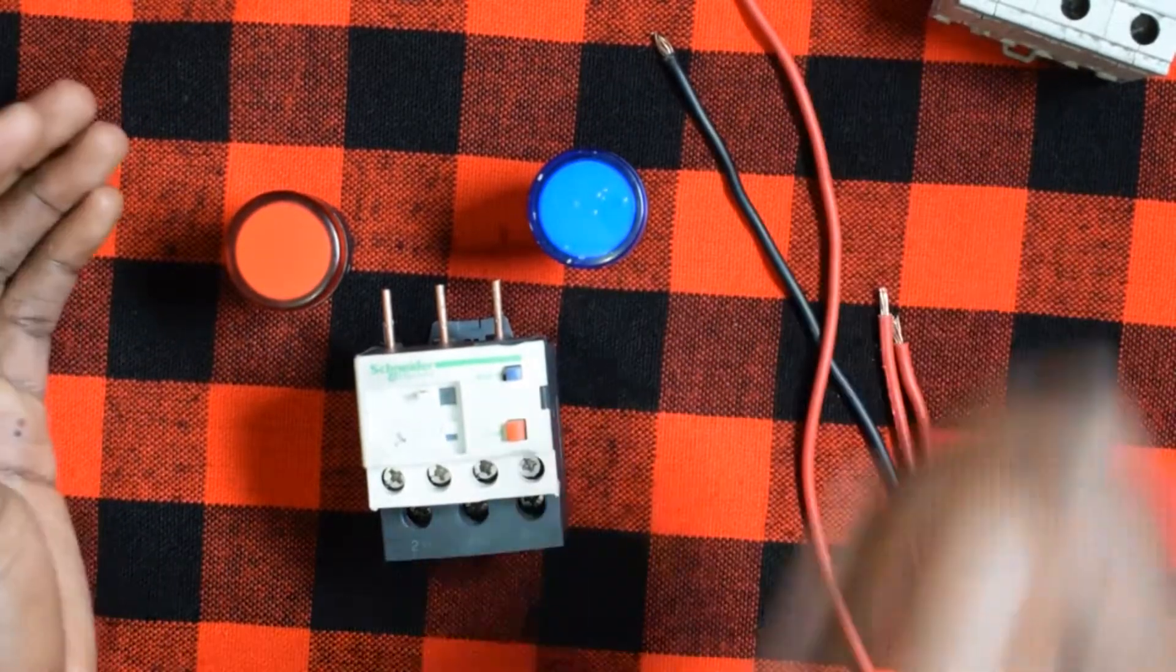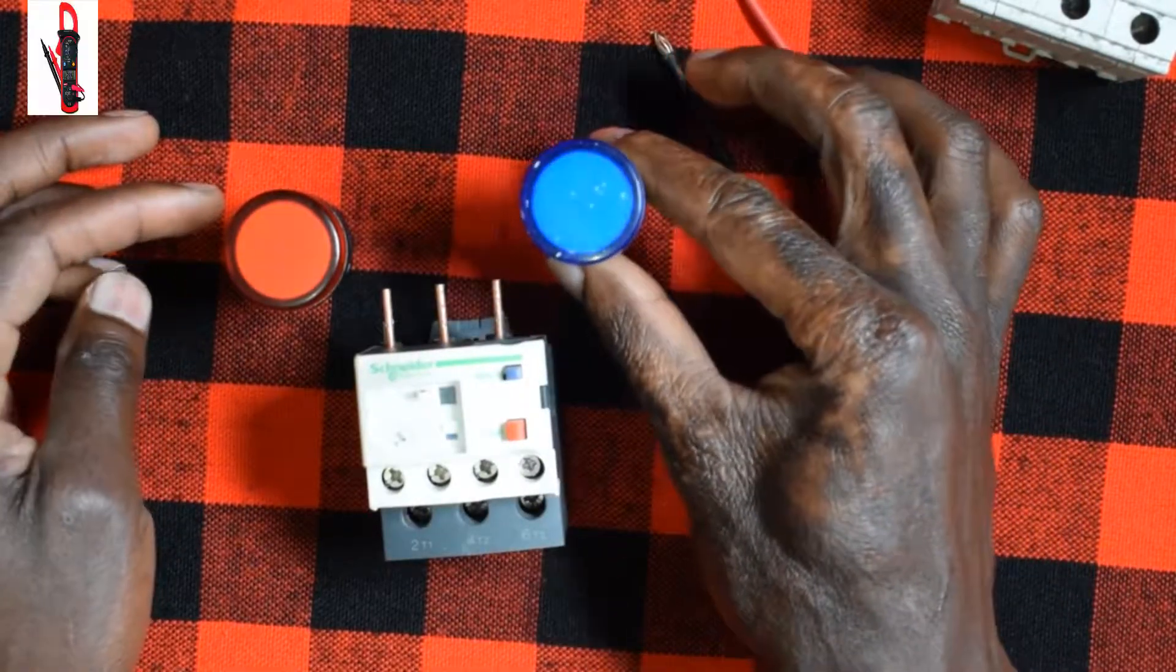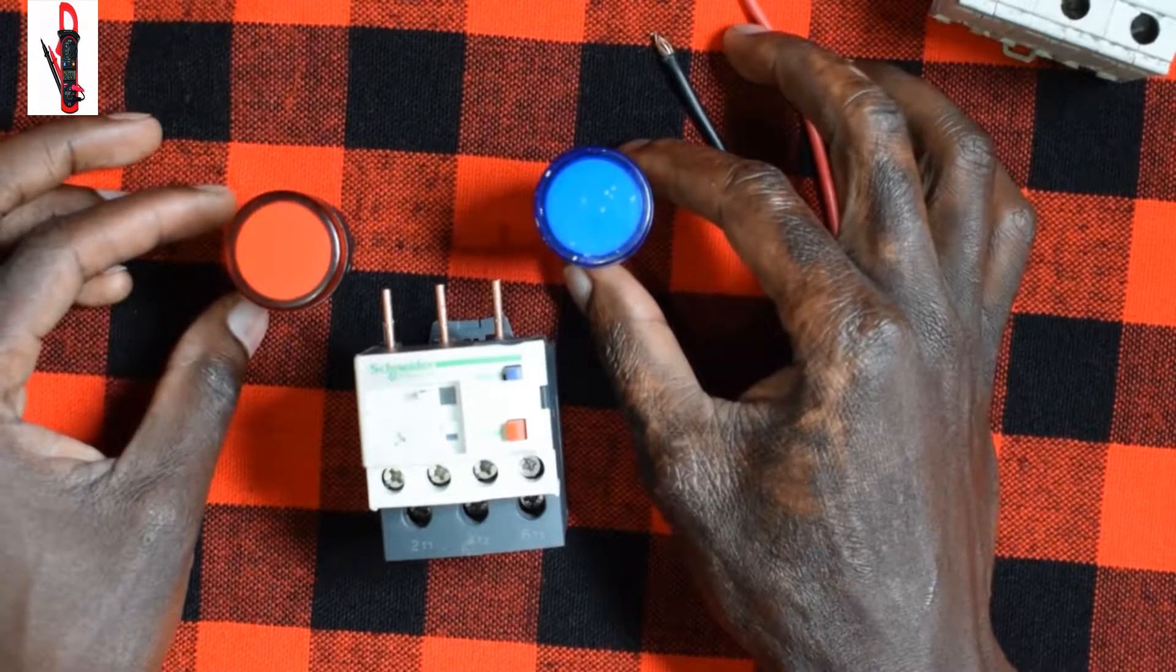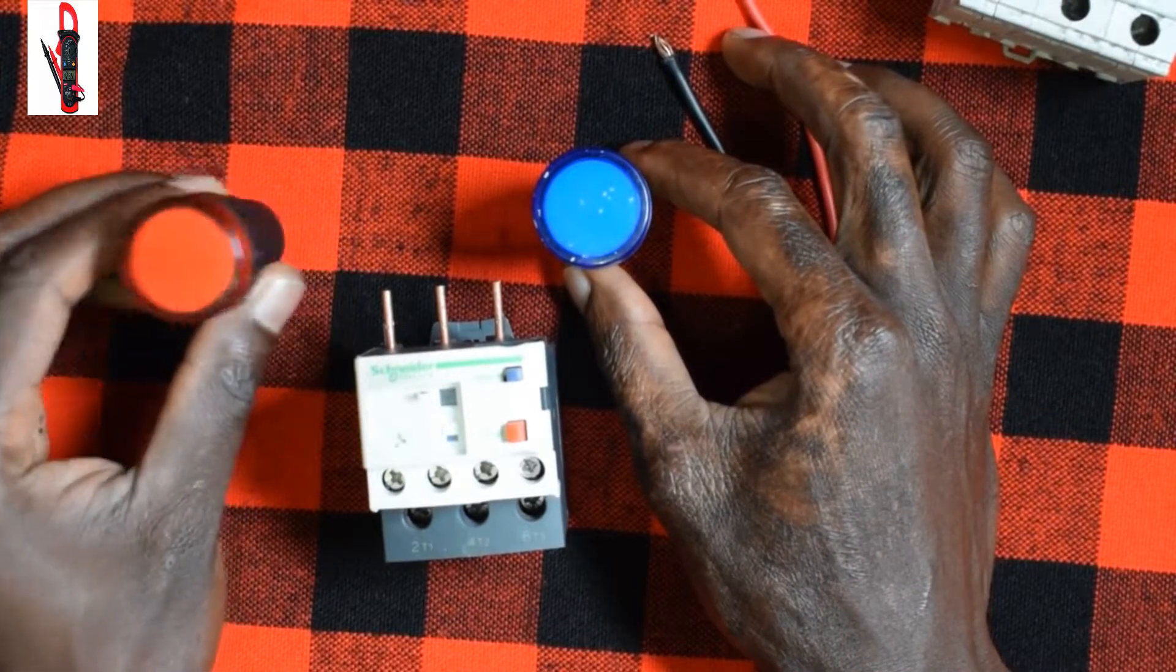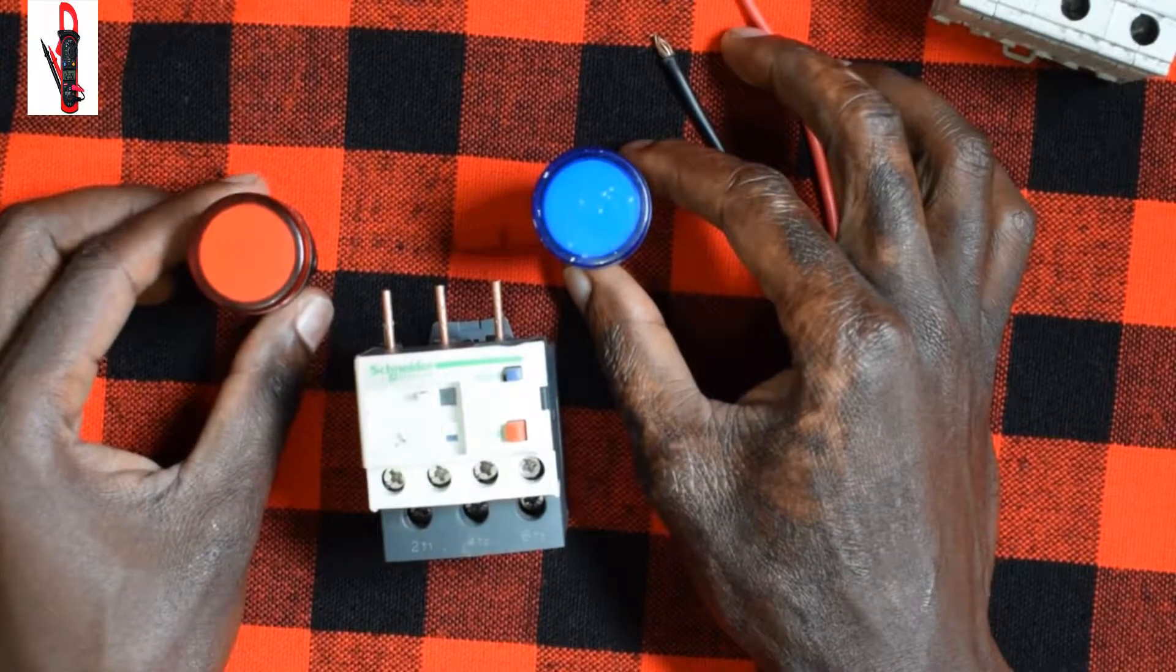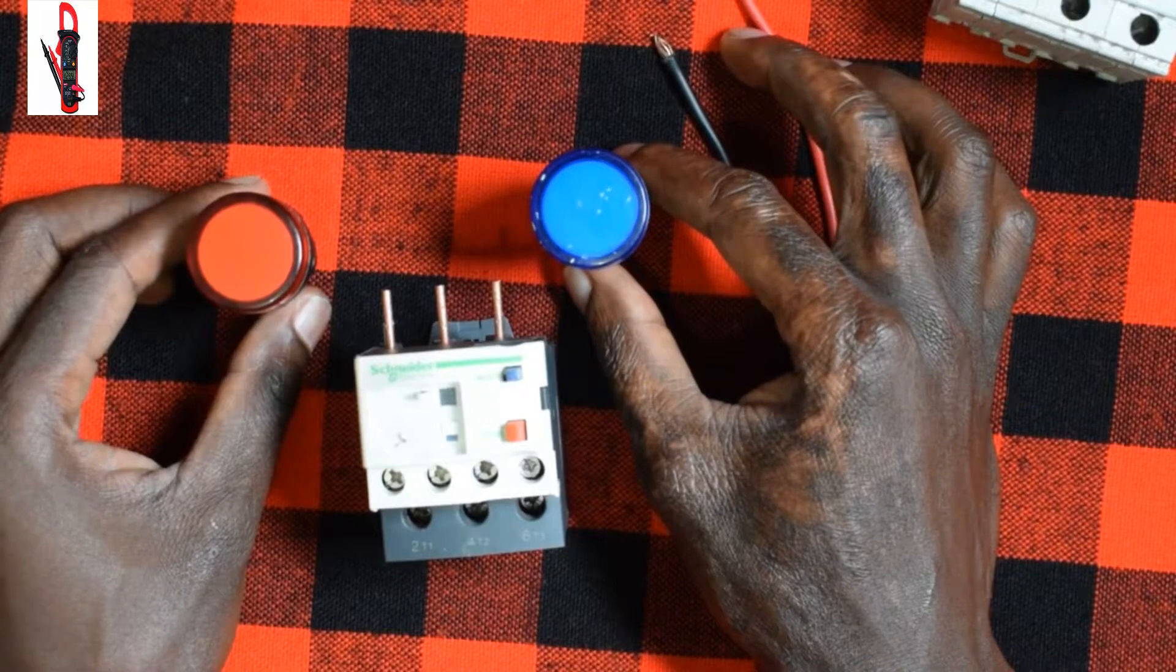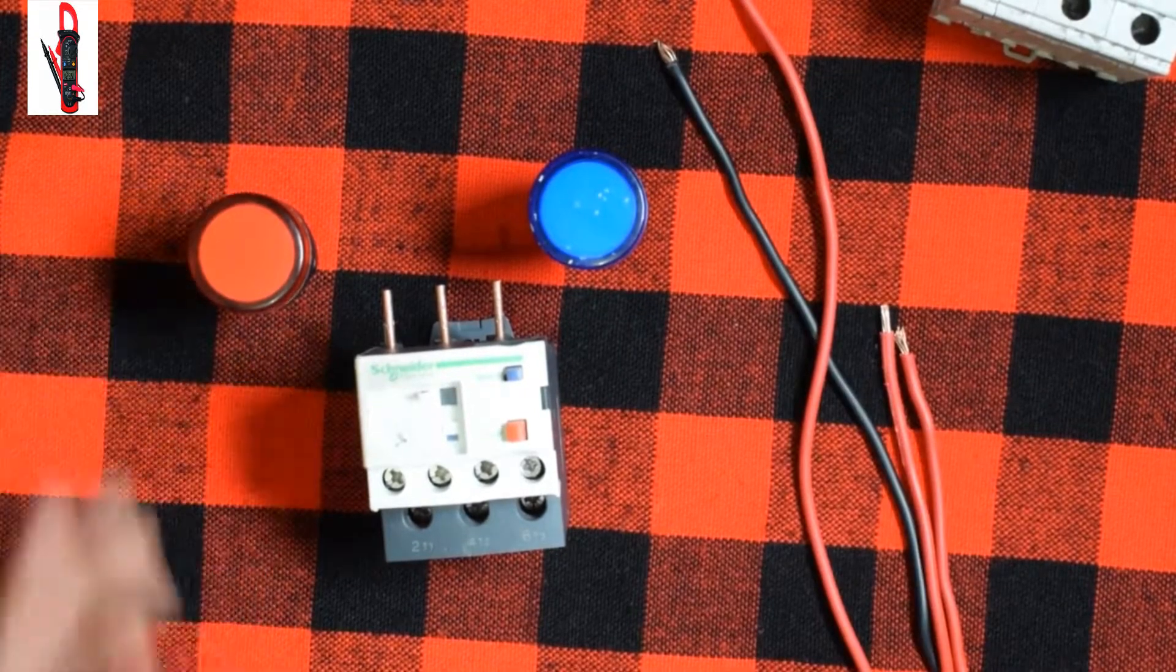So when your panel is running normally, you'll find that the light for running will be on. And in case the circuit trips, the red one will be on and it will indicate, telling you that there is a problem inside your panel.